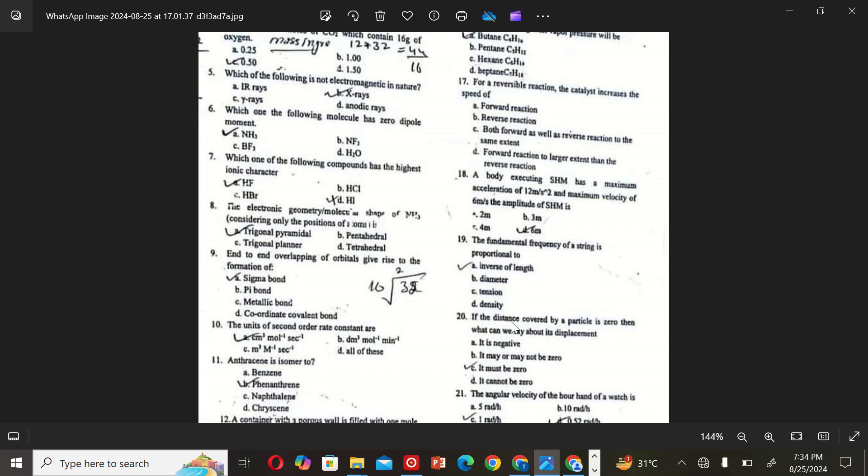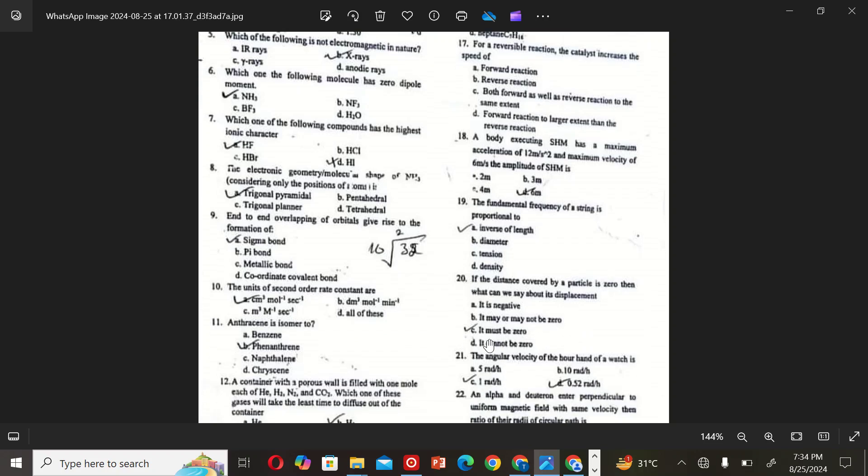The next MCQ is: If the distance covered by a particle is zero, then what can we say about displacement? A: it is negative, B: it may or may not be zero, C: it must be zero, and D: it cannot be zero. So the correct option is C.